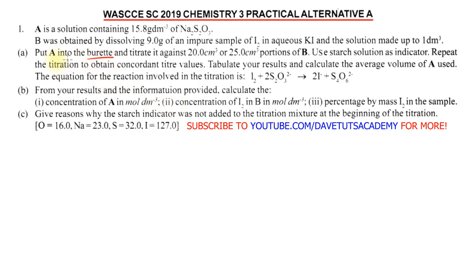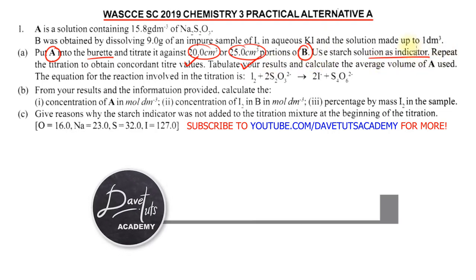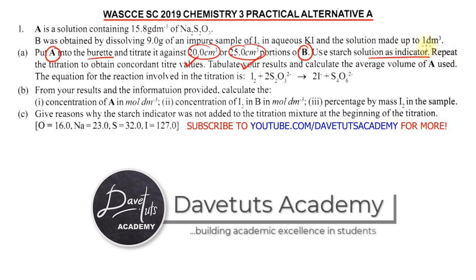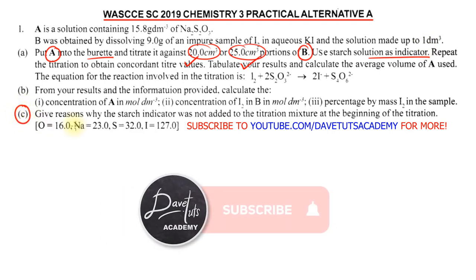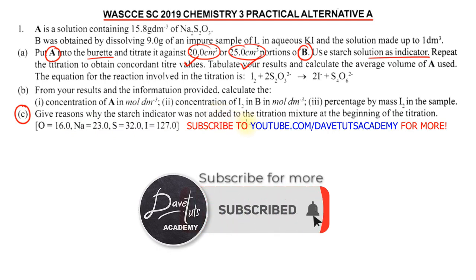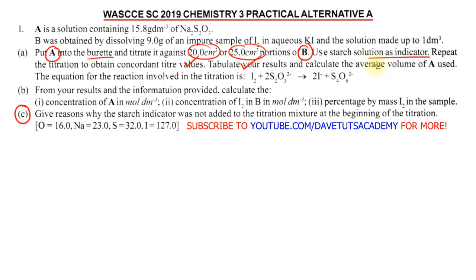First, we have to put A into the burette and titrate it against 20 cm³ or 25 cm³ portions of B measured by pipette. We are going to use starch as the indicator. An important note: we will not be adding the starch at the beginning. One of the questions asks us to give reasons why the starch indicator was not added at the beginning of the titration, so we need to follow along to understand why.